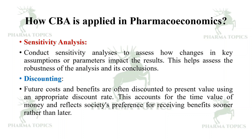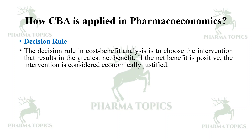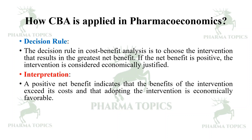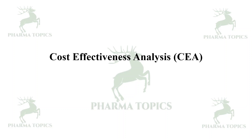Discounting: future costs and benefits are often discounted to present value using an appropriate discount rate. This accounts for the time value of money and reflects society's preference for receiving benefits sooner rather than later. The decision rule in Cost-Benefit Analysis is to choose the intervention that results in the greatest net benefit. A positive net benefit indicates the benefits exceed the costs and the intervention is economically justified. A negative net benefit suggests costs outweigh benefits and alternative options may be explored.